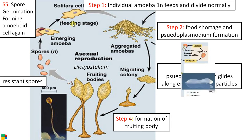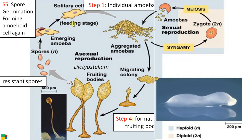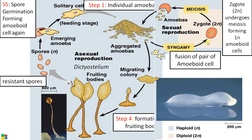Now moving into the second part, which is sexual reproduction. In sexual reproduction, two amoeboid cells behave as gametes and fuse to form a diploid zygote. This is the only diploid stage in the cellular slime mold's life cycle. This diploid zygote then undergoes meiosis, forming haploid amoeboid cells again, thus completing the life cycle.